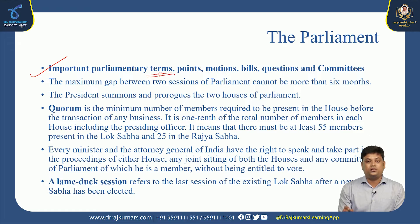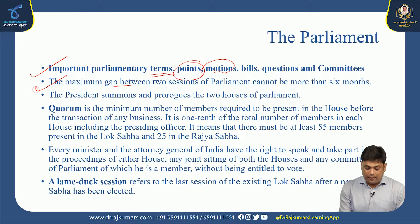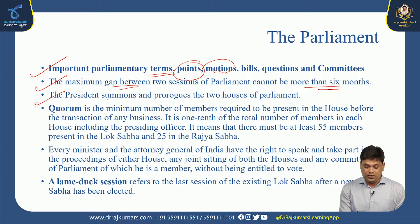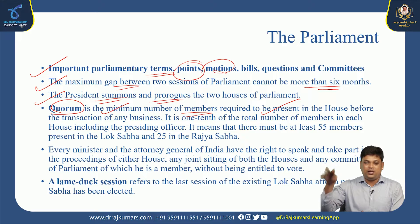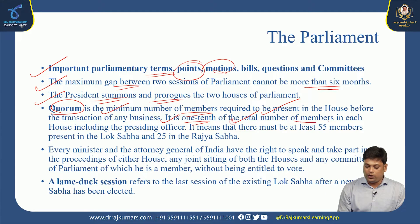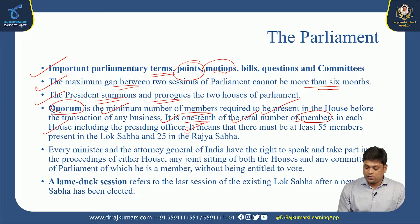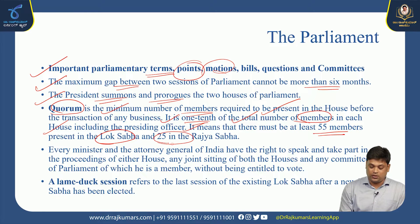Regarding important parliamentary terms: the maximum gap between two sessions of Parliament cannot be more than six months. The President summons and prorogates the two houses of Parliament. Quorum is the minimum number of members required to be present in the house for any transaction of business — it is one-tenth of the total number of members in each house, including the presiding officer.